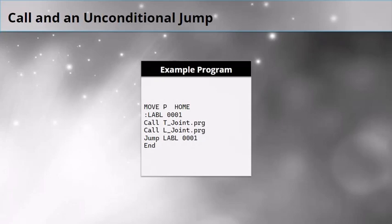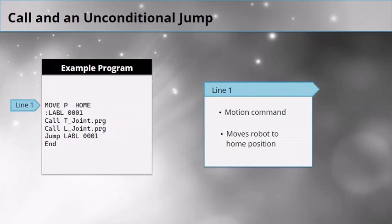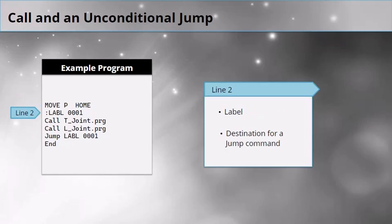This example program shows two calls and an unconditional jump. It can be used as a reference tool when doing your lab work. Line 1 is a motion command that moves the robot to its home position. Line 2 is a label, which is a destination for a jump command used later in the program.